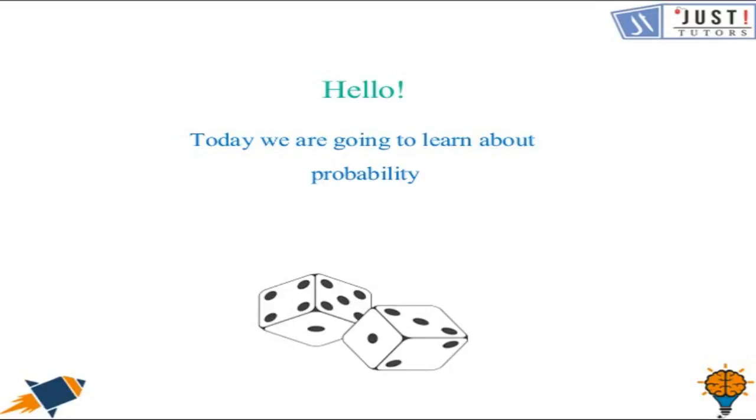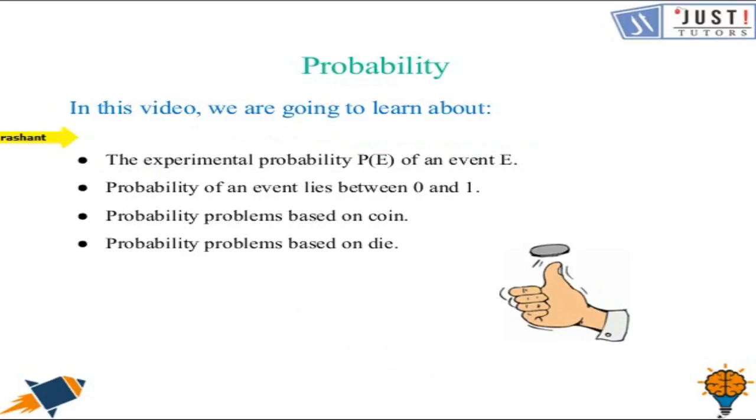Hi, I am Prashant from JustTutors and today we will learn about probability. In detail we will learn experimental probability PE of an event E, probability of an event lies between 0 and 1, probability problems based on coin and probability problems based on die.